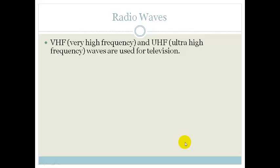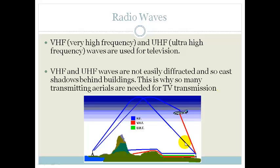Whether a station is national or local determines which frequency they use. VHF and UHF waves are not easily diffracted and so cast shadows behind buildings — this is why so many transmitting aerials are needed for TV transmission. Ultra-high frequency waves can't get over hills or mountains, whereas high and very high frequency waves can reach higher, such as airplanes. To overcome these limitations, satellite dishes are installed on houses so we can receive all these transmissions.